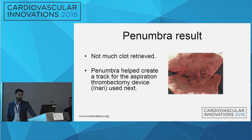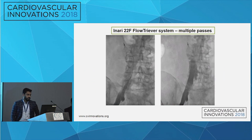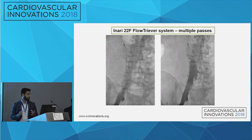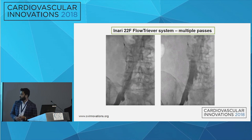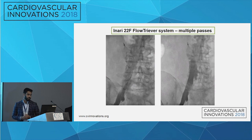We then decided to use the Inari aspiration device. The strategy was that the Penumbra helped create a track with the little clot that was removed, allowing us to go after it with the next device. The Inari FlowTriever system is a manual syringe-based system — a pretty large 20 to 22 French system — as opposed to the Penumbra which is more mechanical and automatic. You basically aspirate out as much clot as you can.